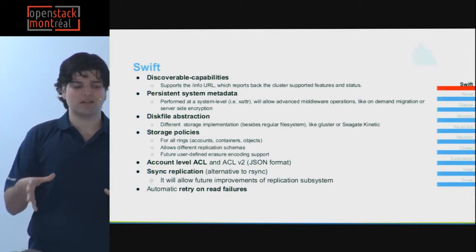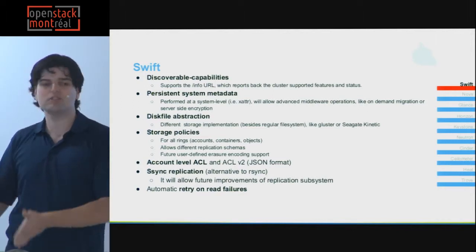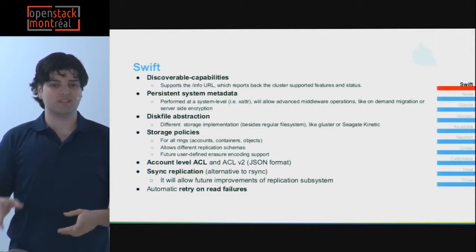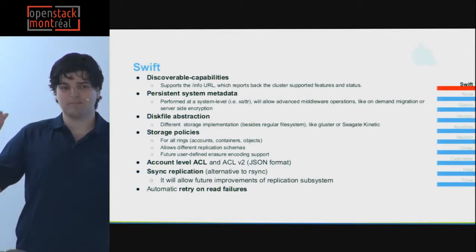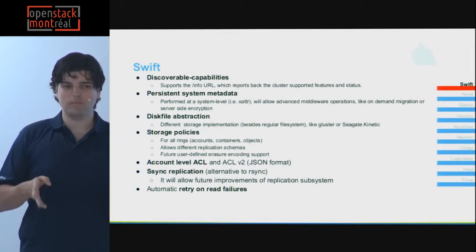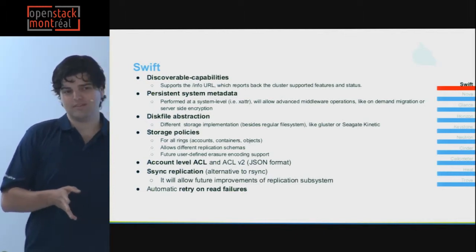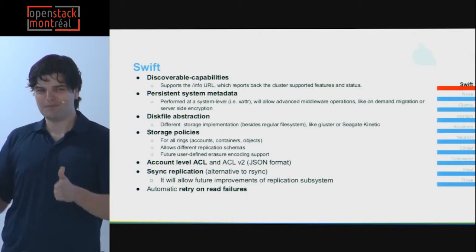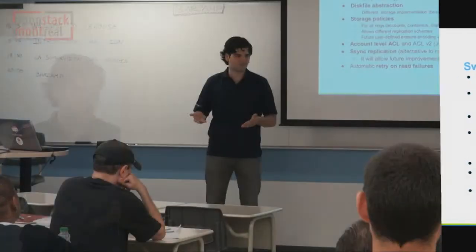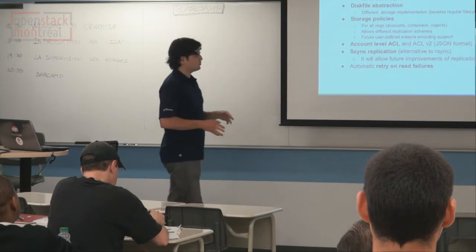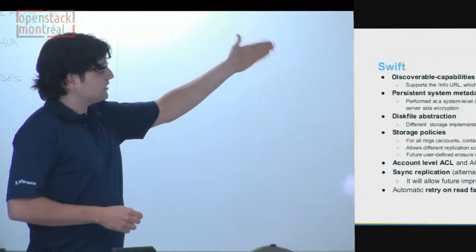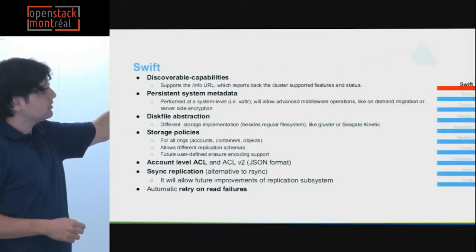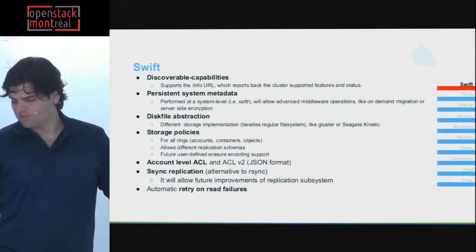This allows companies to have a single storage solution for all their needs, regardless of whether it's compute, object storage, or block storage. Companies like the telcos I mentioned are talking about petabytes — having one big petabyte cluster is hard enough; having two separate half-petabyte clusters is more than twice as complex. They'd rather have one big problem. Other changes include storage policies, new account ACLs, and new replication schemas.